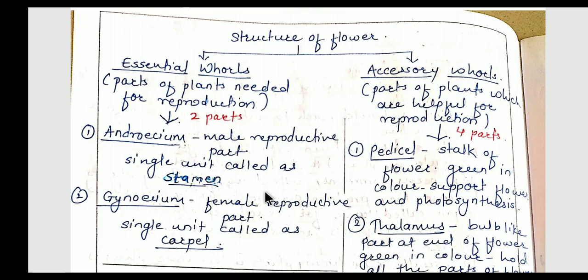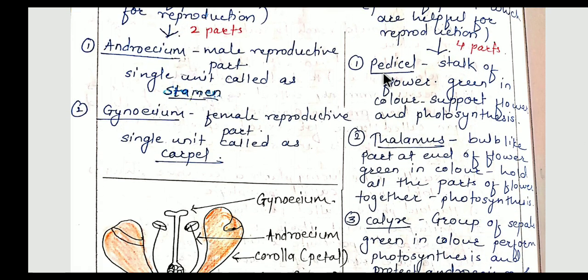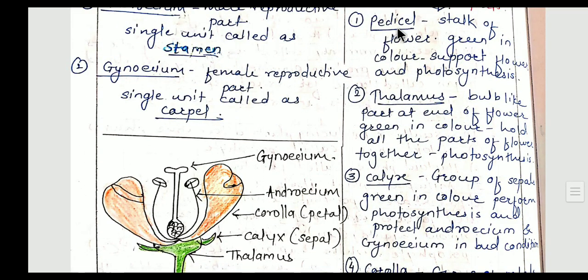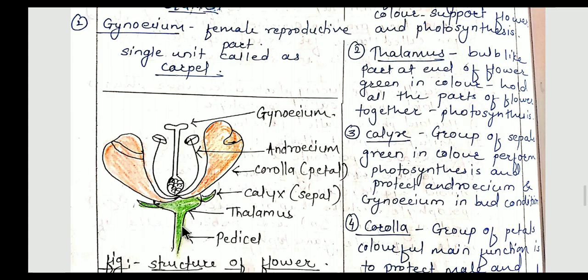When androecium and gynoecium come together and fuse, they produce a seed — the zygote — so they are called the essential whorl. The accessory whorl helps in reproduction and performs other functions like growth and photosynthesis. Four parts are involved in the accessory whorl: pedicel, thalamus, calyx, and corolla. Pedicel is the stalk of the flower which is green in color, supports the flower, and performs photosynthesis.